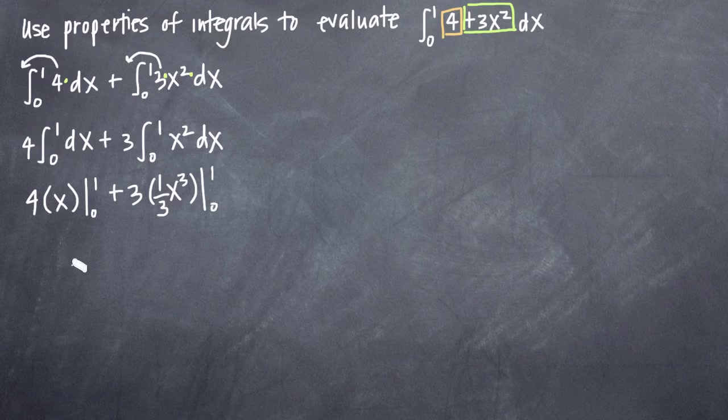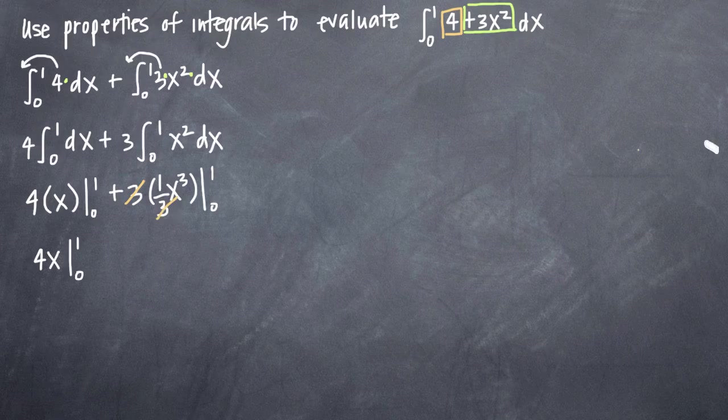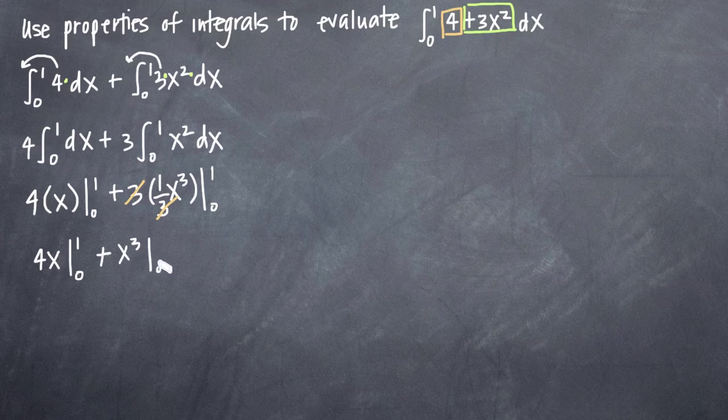Now before we evaluate either of these on the range 0 to 1, we can just go ahead and simplify as much as possible. So we'll get 4x evaluated on 0 to 1. As you may notice, 3 and 3 here cancel from the numerator and denominator, so we'll be left with plus x cubed from 0 to 1.